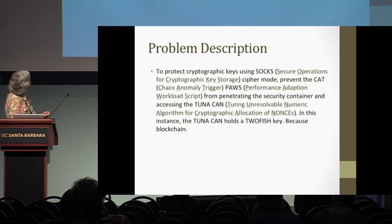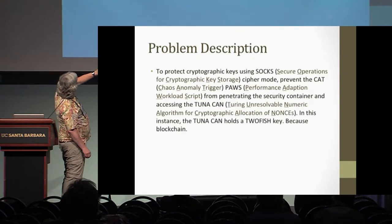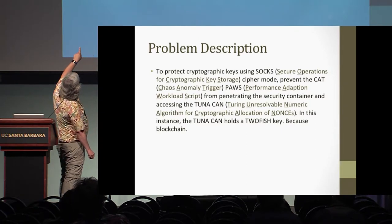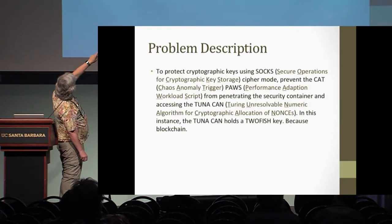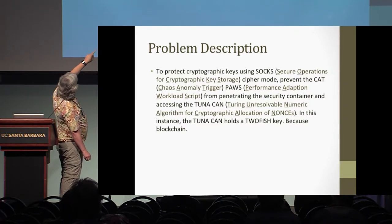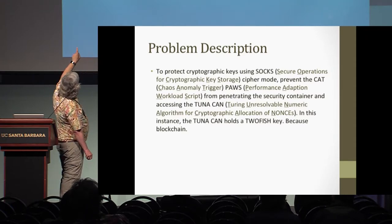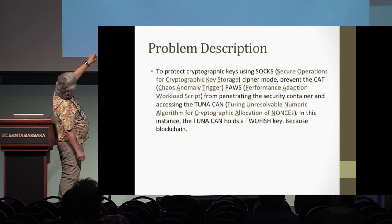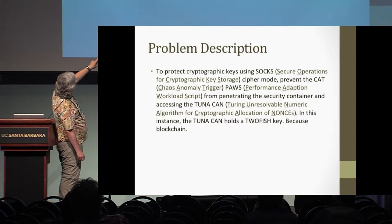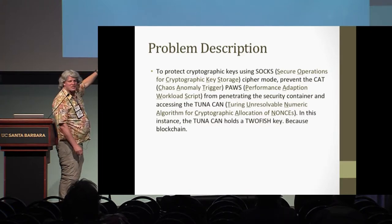The problem description is to protect the cryptographic keys using SOX in the cipher mode, preventing the CATPAUSE from penetrating the security container and accessing the tuna can. In this instance, the tuna can holds a two fish key because blockchain.